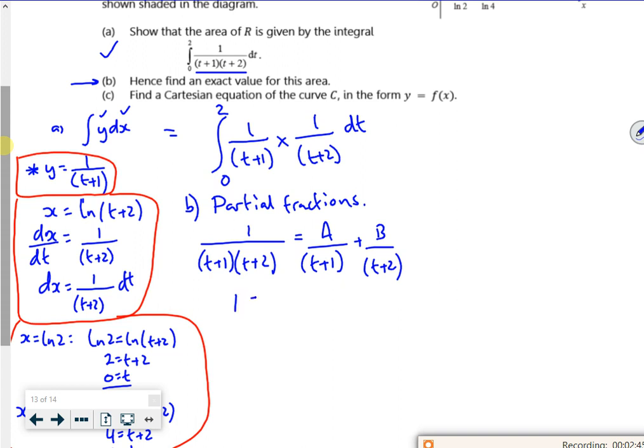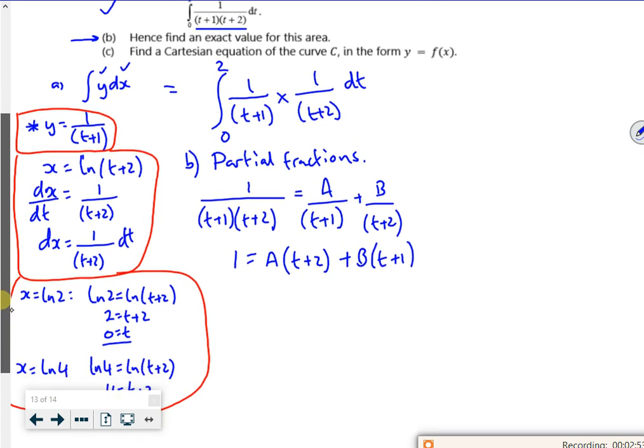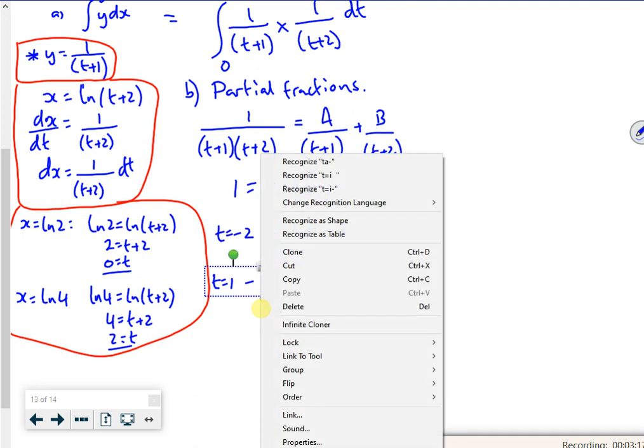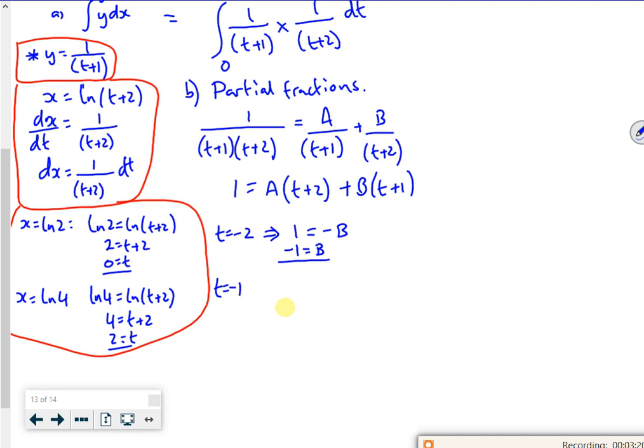Multiply through by the common denominator and see what I've got. So that would be A times t plus 2 plus B times t plus 1. Choose the numbers which get rid of brackets. So t is minus 2. So that would be 1 equals minus B. So minus 1 is B. Are you happy with that? I've got minus 1, t is minus 1 there. I'm getting tired now. I've done 4 lessons on the trot, I'm getting a bit tired.